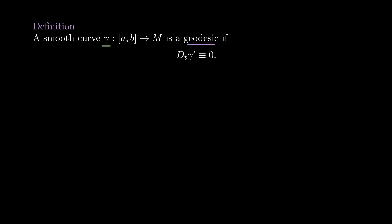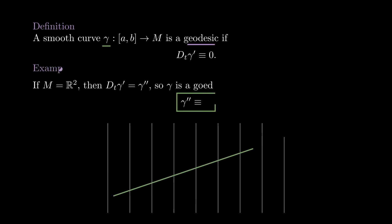It may feel a little unmotivated, but let's see what this means in Euclidean space. In Rn, the covariant derivative is just the usual derivative, and this condition translates as having zero second derivative. In other words, in Rn, a geodesic is a curve with zero acceleration, which is nothing more than a straight line parameterized with constant speed.